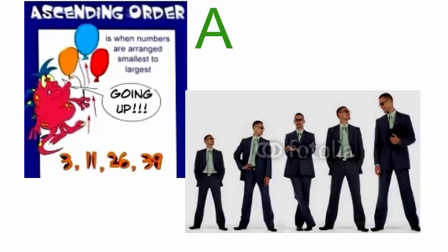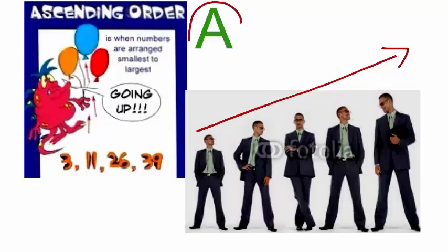What is ascending order? Ascending order means going up or going from small to big. If your answer is ascending order, you will write A.